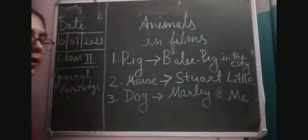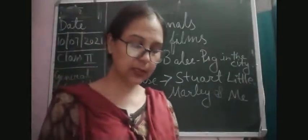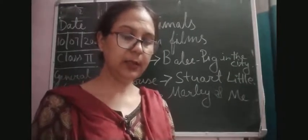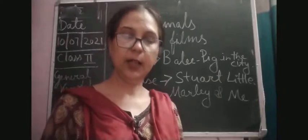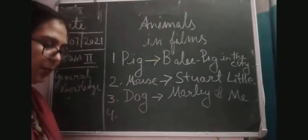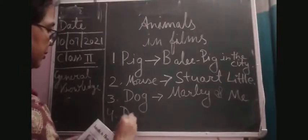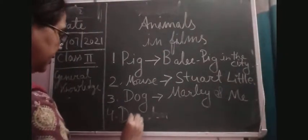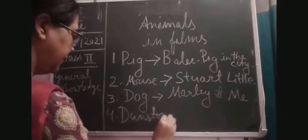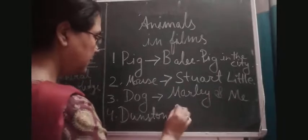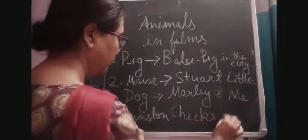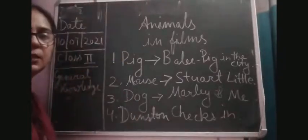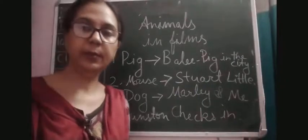Now number four — here you can see a chimpanzee. The chimpanzee played a role in the film Dunstan Checks In. He played a very important role. So for number four you will write Dunstan Checks In.